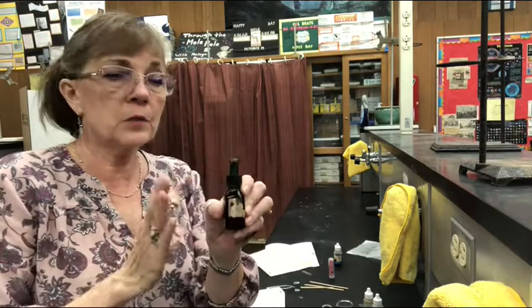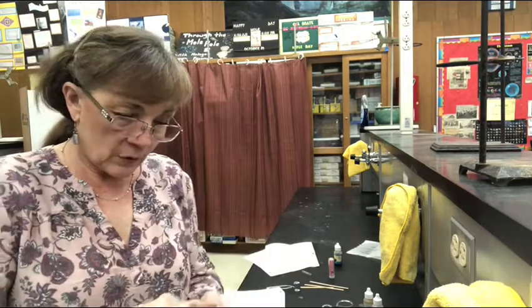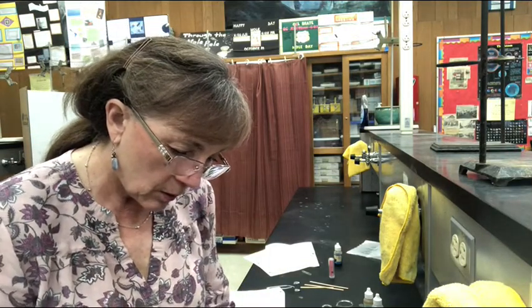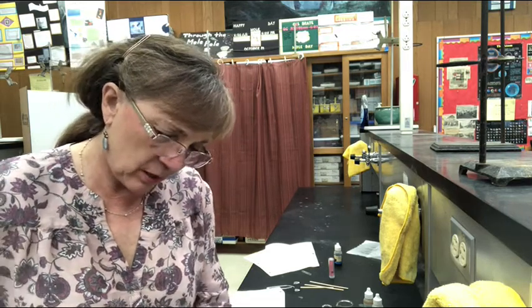So remember silver nitrate is also photosensitive like the hydrogen peroxide, that's why it's in a brown bottle. I'm going to do the same thing. I'm going to put a few drops of each into a well plate and actually I'll leave them unmixed first.